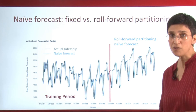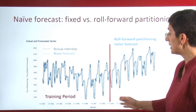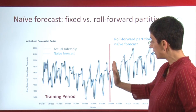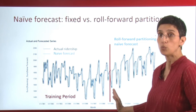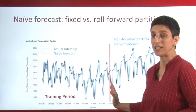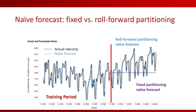In contrast, if we're using fixed partitioning, then the training period will look the same. But once we reach this point, we no longer have any new fresh data. So my naive forecast will simply be the most recent value that we have, and therefore the naive forecast will simply be a straight horizontal line.